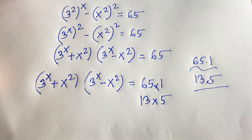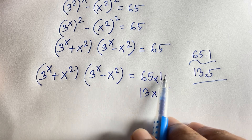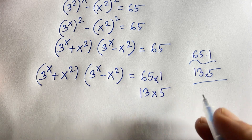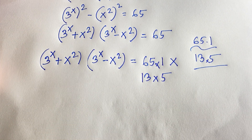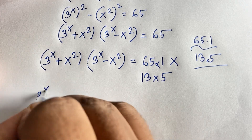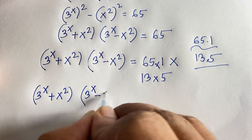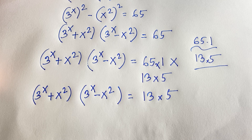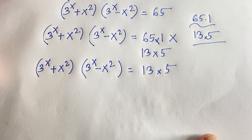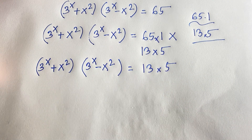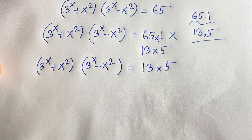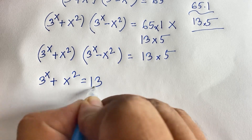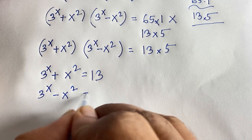So (3^x + x²)(3^x − x²) equals 65 × 1 or 13 × 5. If we try this equal to 1 and this equal to 65, then 3^x would be 1, giving x = 0, and 0 minus 1 is not 1 — so that is rejected. Since x is a natural number, we set 3^x + x² equal to 13 and 3^x − x² equal to 5.